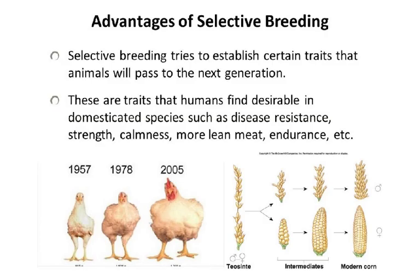The advantages of selective breeding: selective breeding or artificial selection tries to establish certain traits that animals will pass to the next generation — traits that humans find desirable in domesticated species, such as disease resistance, strength, calmness, more lean meat, and endurance. You can see how the modern chicken and modern corn have evolved — we've encouraged and crossed the right animals to get offspring that grow very fast and can be sold for meat. Similarly, we want large-sized corn, because the larger the size the more fruit and the more money the farmer will get.